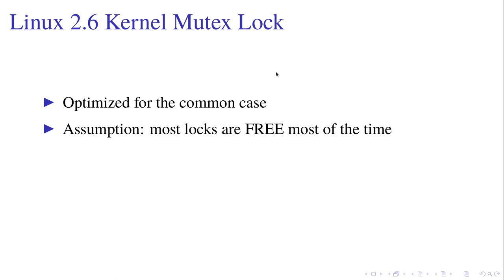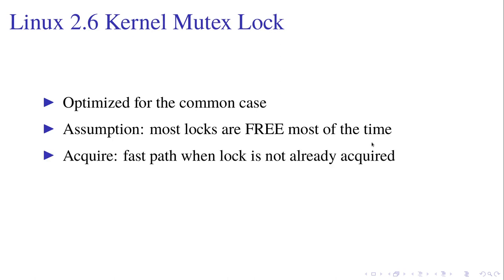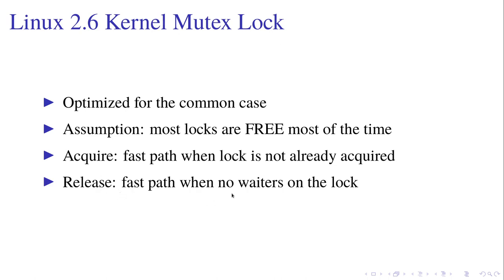The book also talks about the kernel mutex lock in Linux 2.6. This mutex lock is optimized for the common case, based on the assumption that most locks are free most of the time. For acquiring the lock, the fast path — the most common path — is when the lock is not already acquired, and in that situation you only need two instructions to acquire the lock. If the lock is already acquired, you go to the slow path which takes longer. Similarly, when releasing the lock, the fast path is when there are no waiters, and it still only needs two instructions.